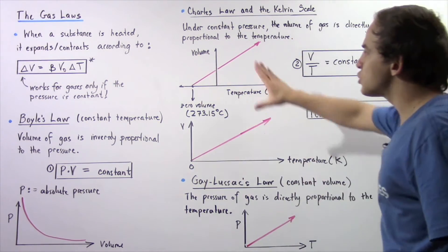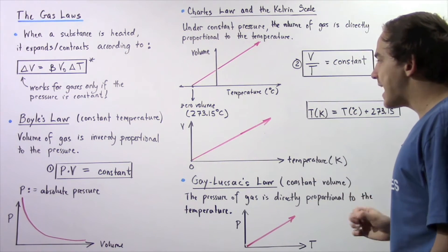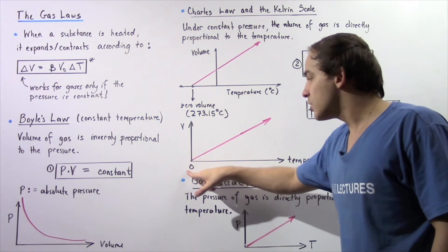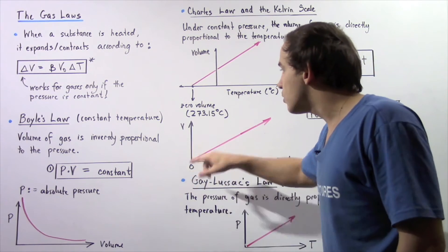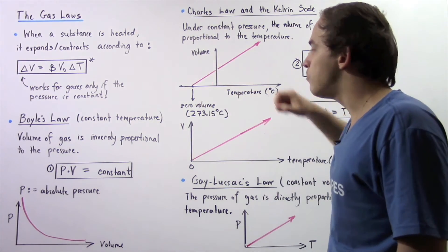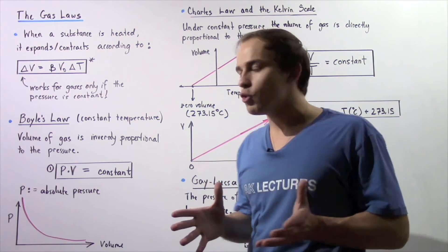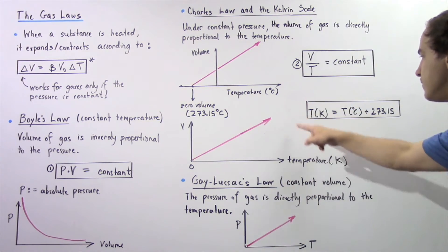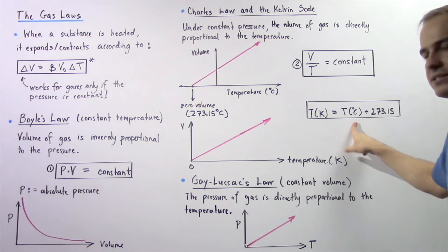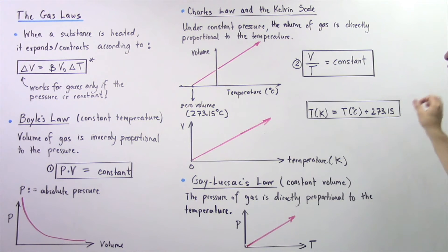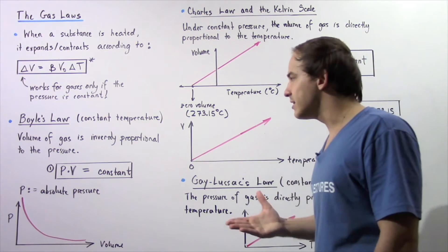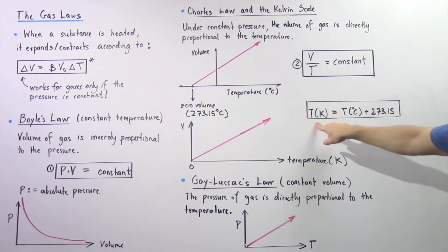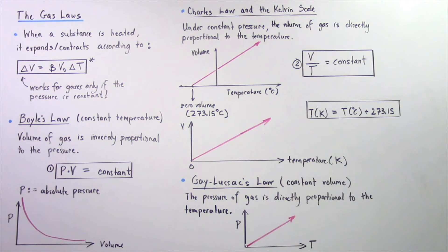We can also plot this on the Kelvin scale, also known as the absolute temperature scale, which begins at a value of zero Kelvin. Zero Kelvin is absolute zero, and zero Kelvin is equivalent to negative 273.15 degrees Celsius. We can develop a relationship between Kelvin and degrees Celsius: the temperature in Kelvin is equal to the temperature in Celsius plus 273.15. For example, 100 degrees Celsius is equal to 373.15 Kelvins.